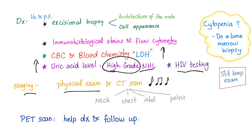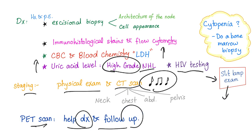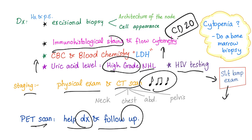For staging, perform a physical exam and CT scan. A slit lamp exam is needed for ophthalmologic abnormalities, because diffuse large B-cell lymphoma can involve the eye. PET scan can help with diagnosis and follow-up. Immunohistochemical staining will show CD20 positive, because this is a B-cell lymphoma. If there is cytopenia such as anemia, thrombocytopenia, or leukopenia, perform a bone marrow biopsy to determine the etiology.